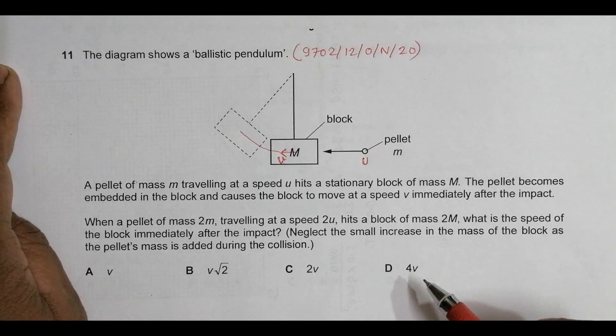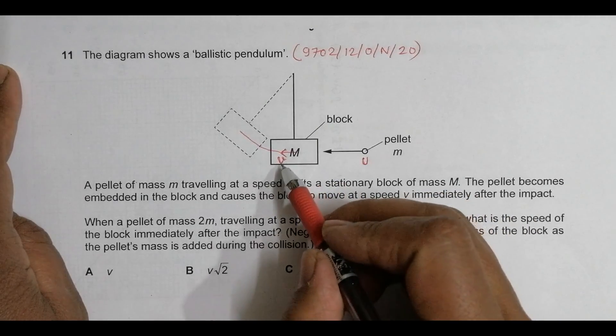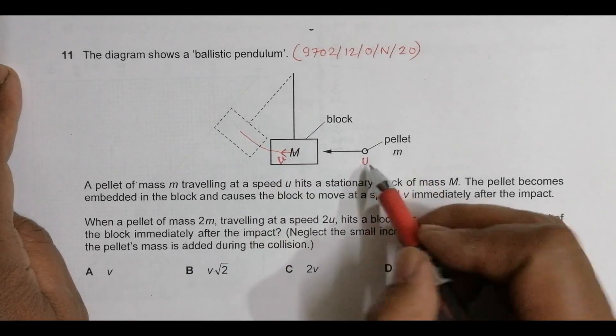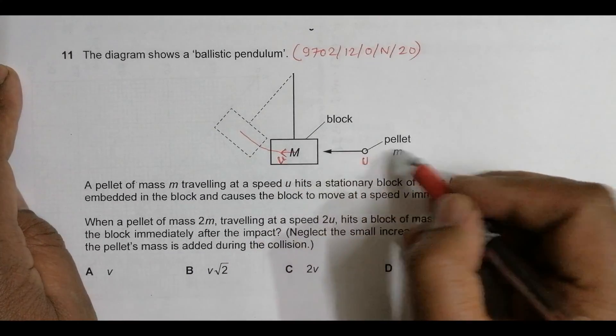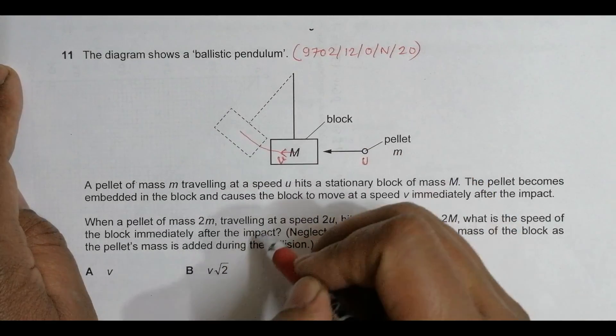First, let's find the equation for V and how it's related to m, M, and u. When the pellet strikes, initially the block was at rest.